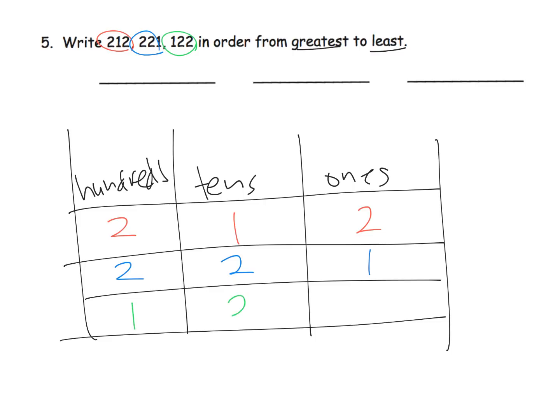And then let's do it in green: 122 is going to be one hundred, two tens, and two ones. What I would do is at this point, I would just think logically or imagine what the bundles of popsicle sticks would look like. Since this green number only has one bundle of the hundreds, we know it is officially the least, so it's going to go way in the back. So now we're kind of done with this one.